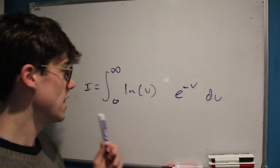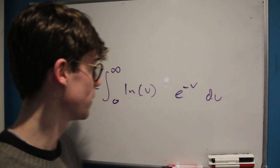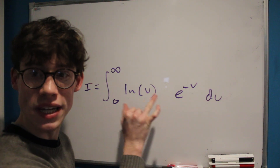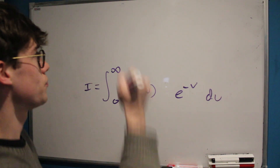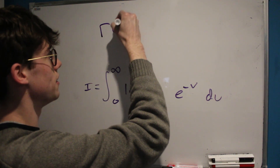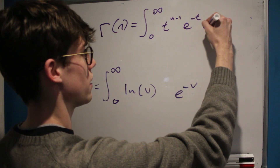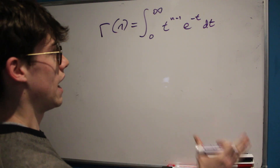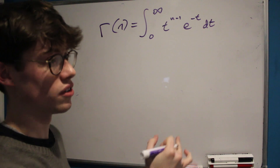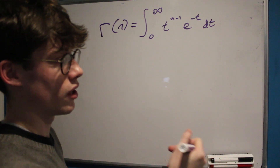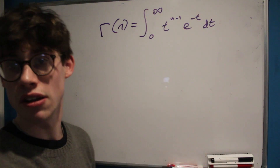This integral takes us back to the first video I ever covered on this channel, which was deriving the product form for the gamma function, because there is a relation between this integral and one that relates to the gamma function. The way we notice that is by considering that gamma of n equals the integral from zero to infinity of t to the n minus one multiplied by e to the negative t, with respect to t. The e to the negative t term was present in our integral, but the t to the n minus one wasn't — so is there an operation we can perform to yield a natural log of t in the integrand?